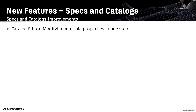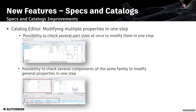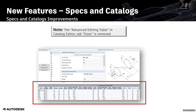You are now able to modify multiple properties in one step. For example, for one component you can select several sizes together and modify specific properties in one step. For size-dependent properties it is also possible to select several components at once of the same family — this is important for modifying general properties in one step. If you select several components of different families, the fields will be grayed out and it is not possible to modify the values directly.